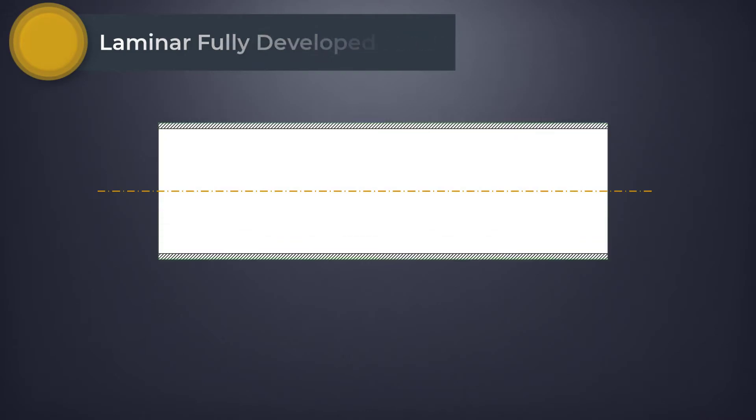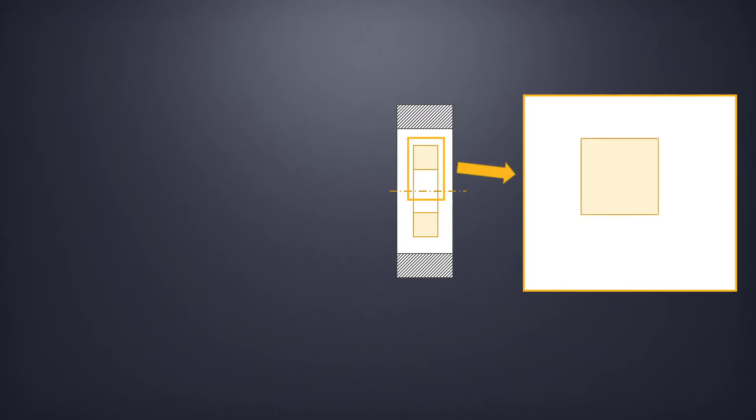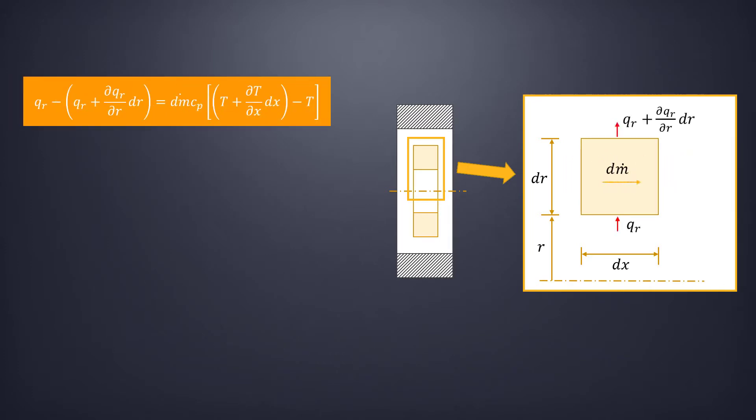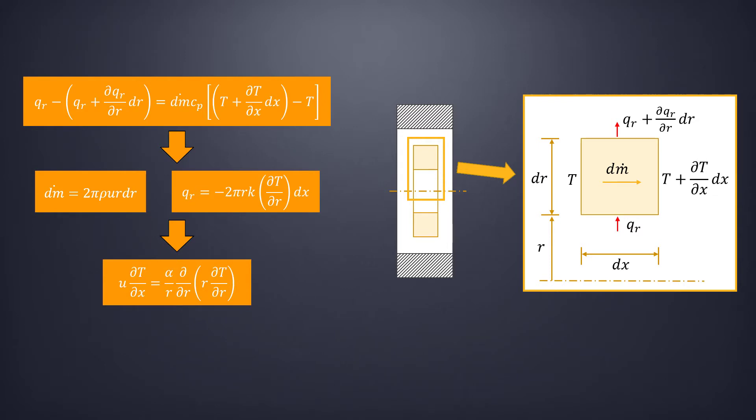Let's start our analysis with laminar fully developed flows. Consider a steady, incompressible flow with constant properties through a circular pipe with constant diameter. If we analyze an infinitesimally small control volume, we can assume that the heat conduction acts only in the radial direction and the thermal energy advection occurs only in the axial direction. We can write the thermal equilibrium in this form and then simplify it into this final relation.